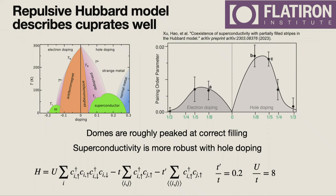Now let's talk about D-wave order, which is the more exciting problem. The repulsive Hubbard model is well known to describe the cuprates. The left plot is a cartoon phase diagram of the cuprates with two domes — the small dome on the left for electron doping and the larger dome on the right for hole doping. The right figure is from a recent paper combining AFQMC and DMRG that gets a lot of things correct: where the domes are located and that the hole-doping dome is larger than the particle-doping dome.